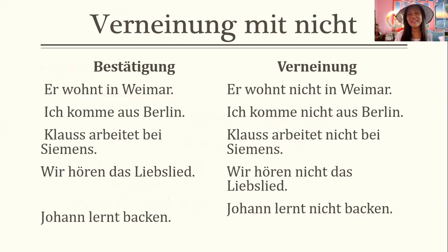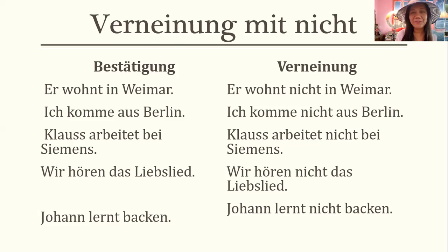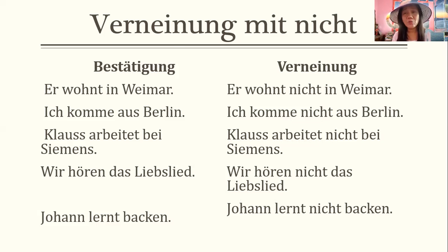Since we're done with open-ended questions, we have to do the close-ended question — ja oder nein. Nicht is the negative form. Bestätigung is the affirmative sentence; Verneinung is the negative sentence. Zum Beispiel: er wohnt in Weimar — you put nicht after the verb, before the preposition — er wohnt nicht in Weimar. Ich komme aus Berlin, aber ich komme nicht aus Berlin. Klaus arbeitet bei Siemens, Klaus arbeitet nicht bei Siemens. Wir hören das Liebeslied, wir hören nicht das Liebeslied. Johan lernt Backen, Johan lernt nicht Backen.